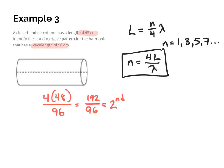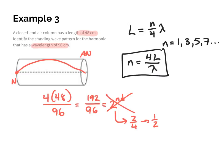To show why the second harmonic isn't possible: two-fourths is the same as half a wave. Drawing a half wave, the open end would land on a node — but the open end requires an antinode, so this is not possible. That is why only odd harmonics exist in a column closed at one end.